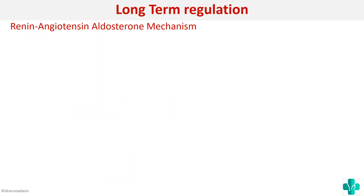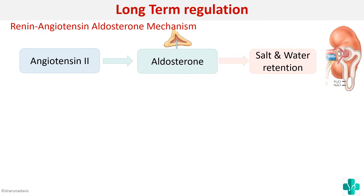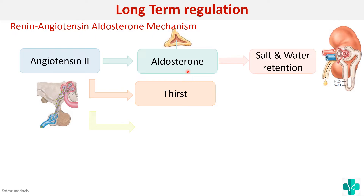Angiotensin 2 has multiple mechanisms. First, angiotensin 2 can cause release of aldosterone from the adrenal glands, and aldosterone in turn can increase sodium and water reabsorption, thereby increasing blood volume. The next action of angiotensin 2 is that it can induce thirst and also stimulate the release of ADH — anti-diuretic hormone — from the pituitary.